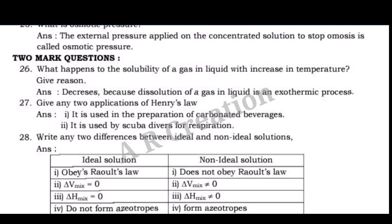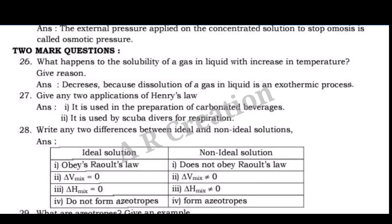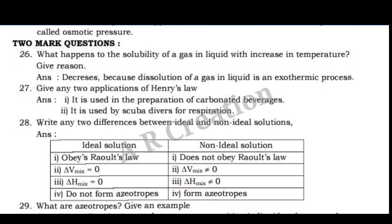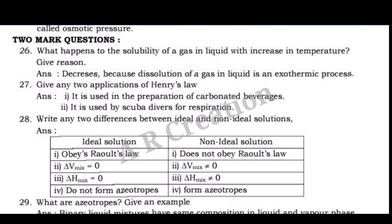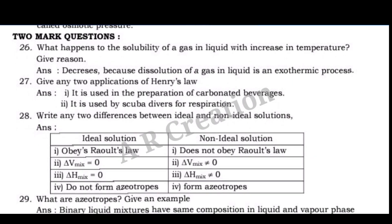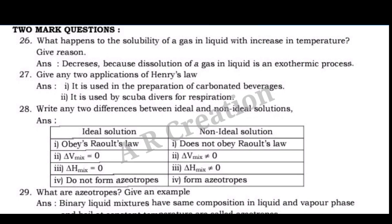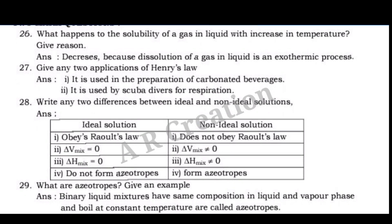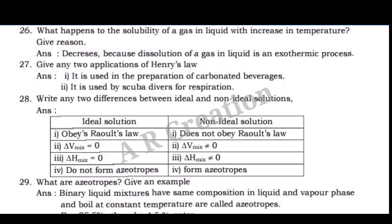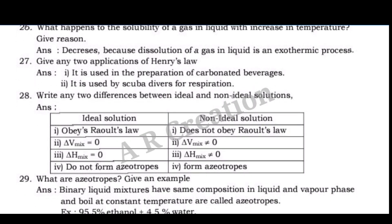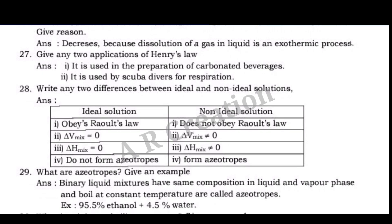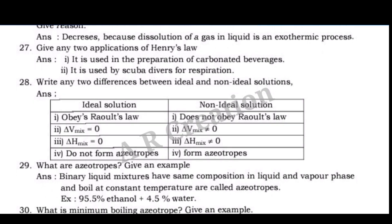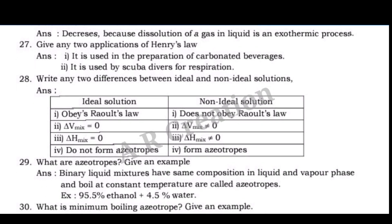Question 28: Write any two differences between ideal and non-ideal solutions. Question 29: What are azeotropes? Give an example. Answer: Binary liquid mixtures that have the same composition in liquid and vapor phase and boil at constant temperature are called azeotropes. Example: 95.5% ethanol + 4.5% water.